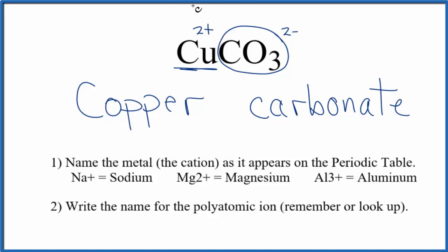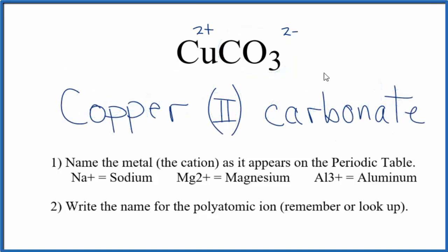So to show that the copper here is two plus, we're going to put a Roman numeral two between the copper and the carbonate. So the name for CuCO3 is copper two carbonate.